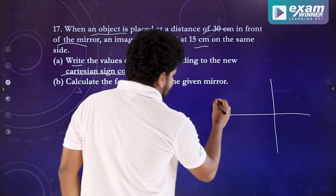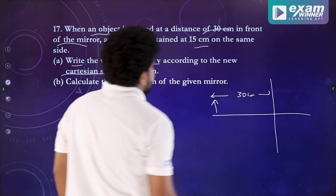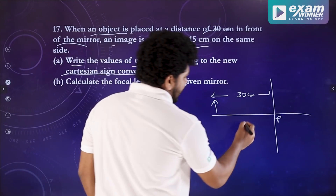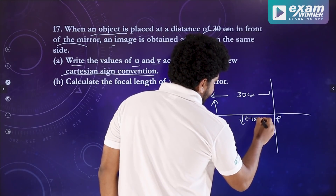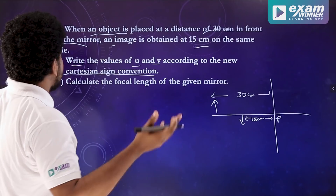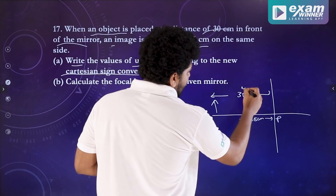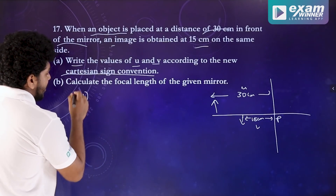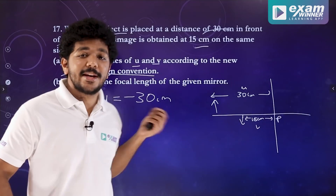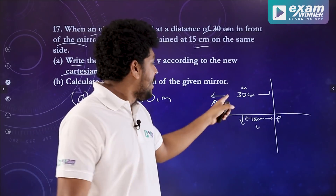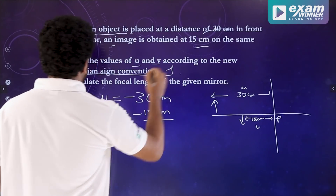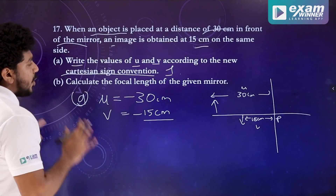The object is placed 30 cm in front of a mirror — this is in front of the pole. An image is obtained at 15 cm on the same side. The pole to the left is negative and to the right is positive. So u is equal to minus 30 cm. The value of v is minus 15 cm because it is on the left side. To calculate the focal length of the given mirror.